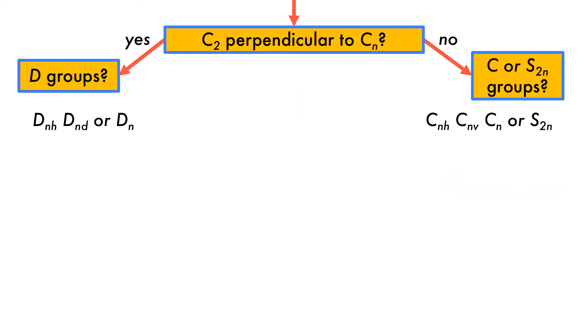The next question we are faced with is whether or not there is a C2 rotational axis perpendicular to the principal axis. If there is, then we have three point groups with the D capital letter, meaning that there is a C2 rotational axis perpendicular to the principal axis. Recall that N represents the order of the principal axis.